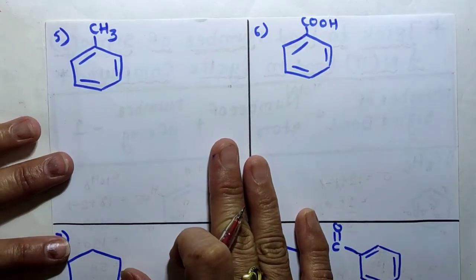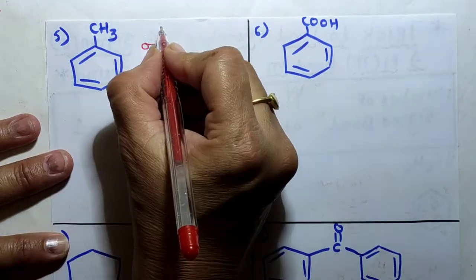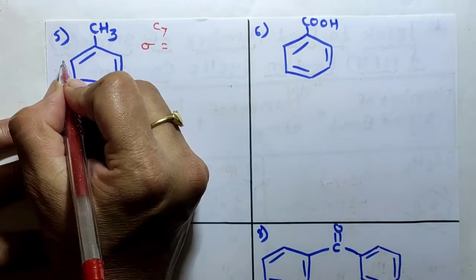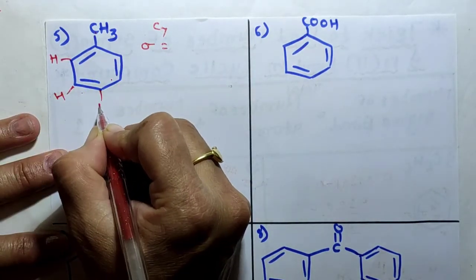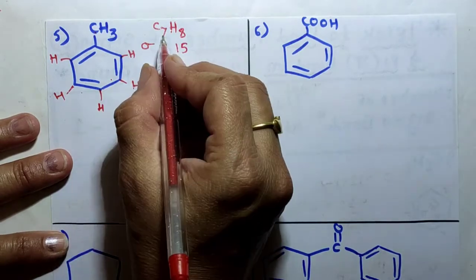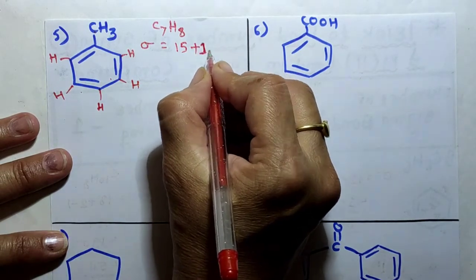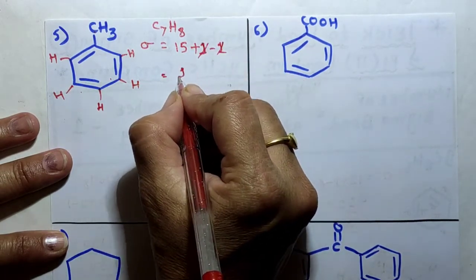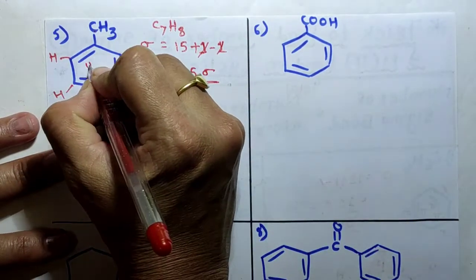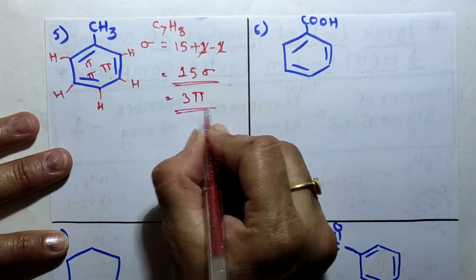Next compound: toluene. To calculate sigma bonds: carbon = 7 (C7), hydrogen = 5 on the ring plus 3 on CH3 = 8 (H8), so C7H8. Total number of atoms = 15. Plus number of rings = 1, minus 1 — they cancel. Therefore 15 sigma bonds. For pi bonds: 3 double bonds in the benzene ring, so 3 pi bonds are present in toluene.